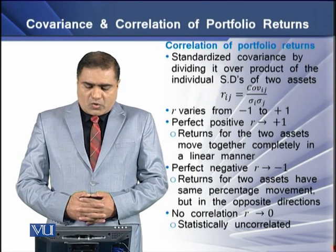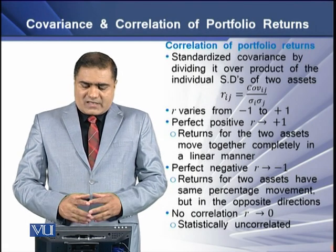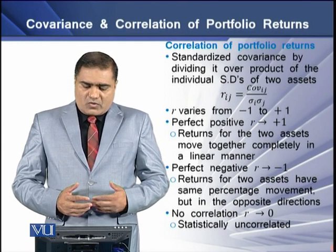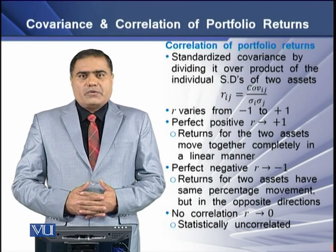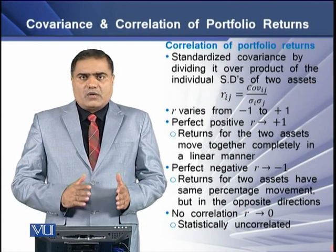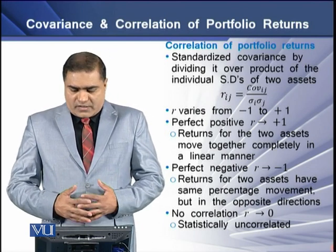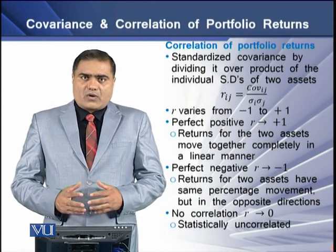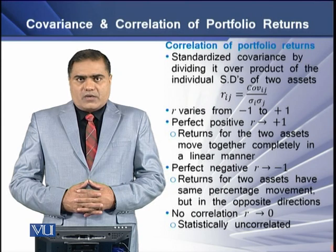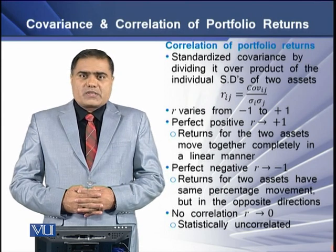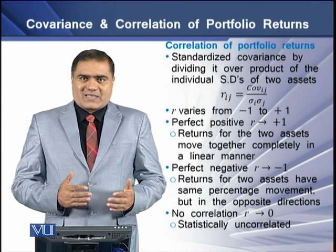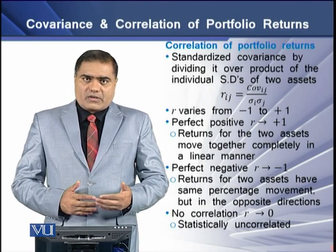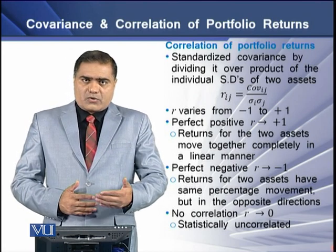The second measure is correlation. It is the standardized covariance, calculated by dividing covariance by the product of the individual standard deviations of the two assets I and J. Using this formula, we determine correlation R by dividing the covariance between two assets by the product of their individual standard deviations. This R correlation may range from negative 1 to positive 1.